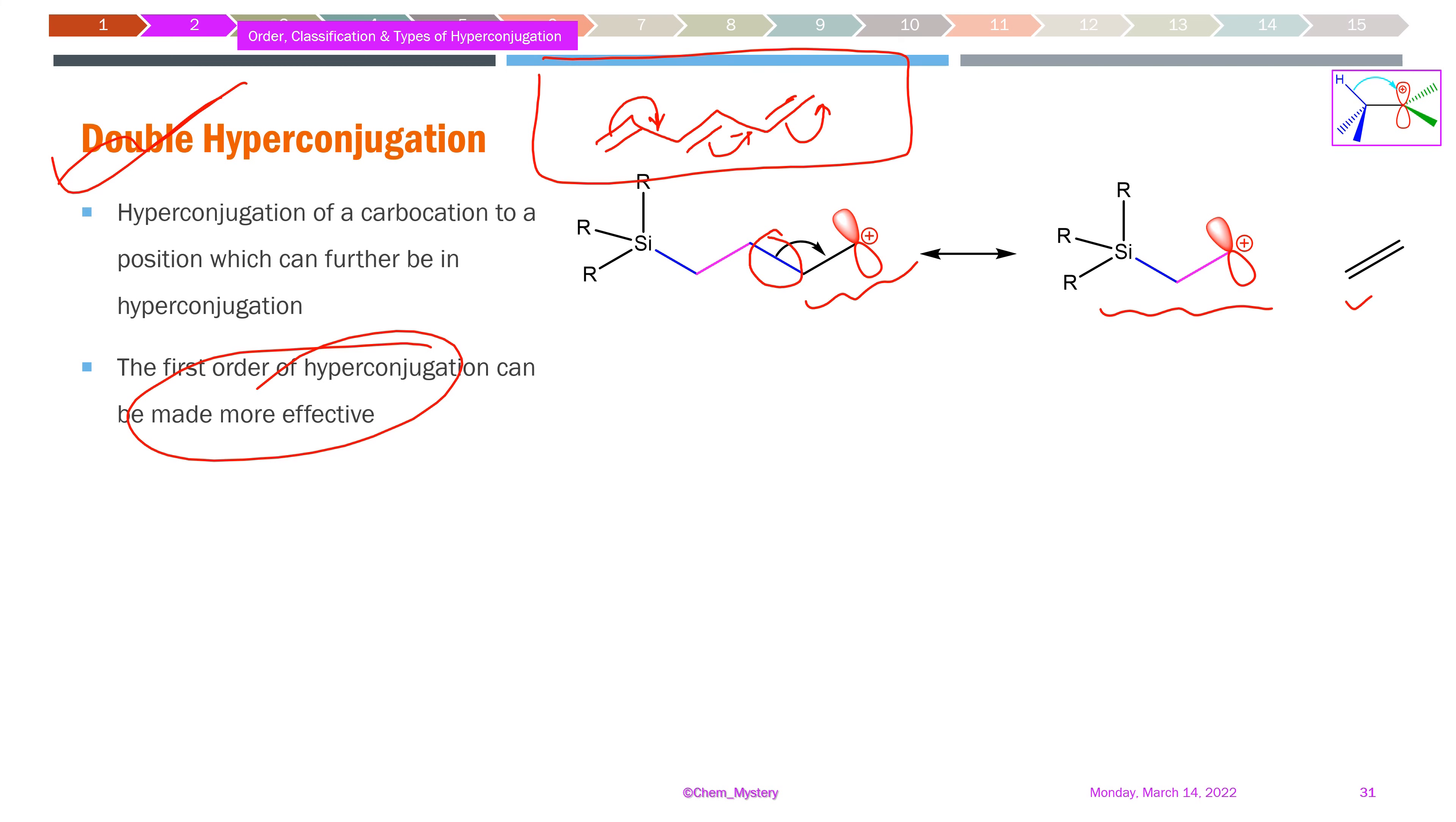Now we see an excellent possibility for hyperconjugation because the silicon-carbon bond can undergo hyperconjugation much more readily than a carbon-hydrogen bond would.